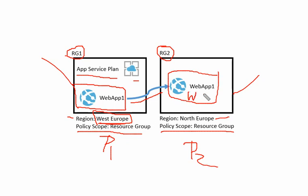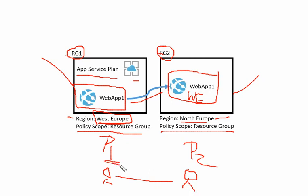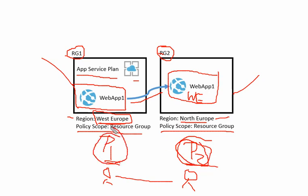The web application remains in West Europe region but will reside inside RG2, which has a North Europe region. Think of it like moving from one country to another — each country has its own rules. When you change resource groups, the policies change. Since the web application is now inside Resource Group 2, Policy 2 will apply, not Policy 1 which applied when it was in Resource Group 1.